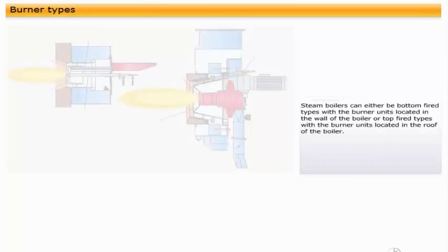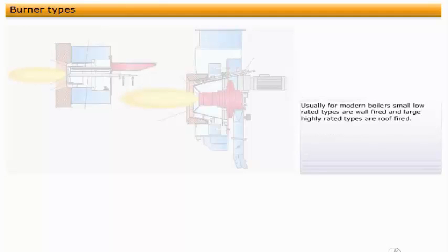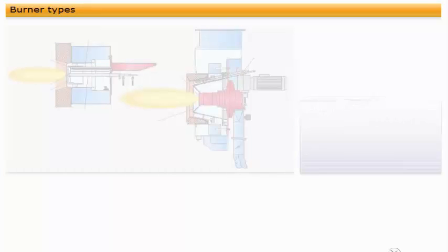Steam boilers can either be bottom-fired types with the burner units located in the wall of the boiler, or top-fired types with the burner units located in the roof of the boiler. Usually for modern boilers, small, low-rated types are wall-fired, and large, highly-rated types are roof-fired.